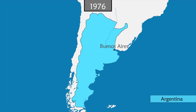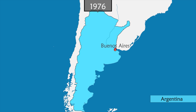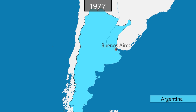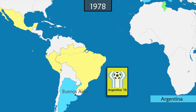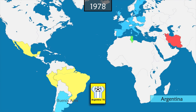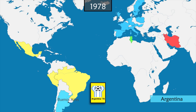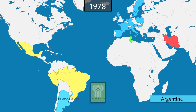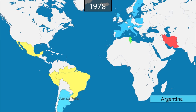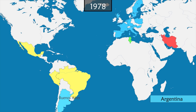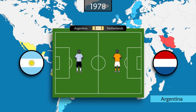In 1976, just as Argentina is preparing to host the next World Cup, a coup d'état takes place and a military dictatorship seizes power. Despite the controversy, the country still organizes and hosts the World Cup, but the event is marked by a series of suspicions of cheating in favor of Argentina, which is allowed to play its matches in staggered order, giving it the advantage of knowing the scores of other matches. Argentina wins the final against the Netherlands.